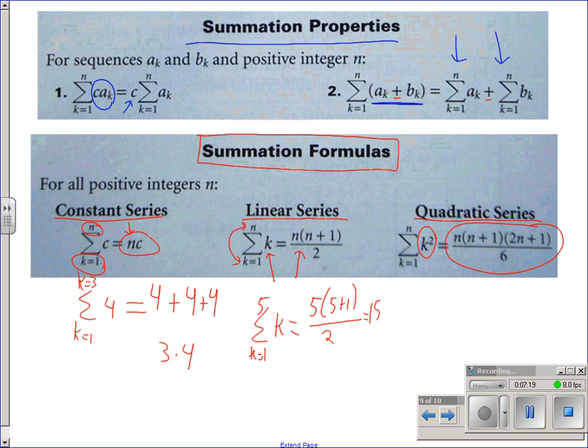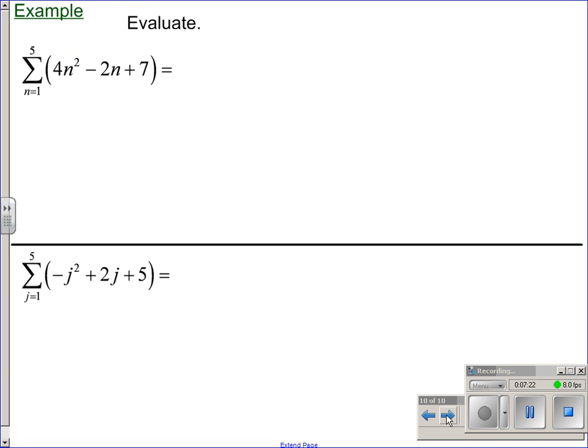So, what we're going to do is combine the properties with these formulas to do these examples. I'm going to expand this thing out. Now, we've got adding and subtracting terms here. So, to start with, n equals 1 to 5 of 4n squared. Then, we're going to subtract the summation of 2n, n equals 1 to 5. And then, we're going to add the summation of 7 from n equals 1 to 5. Now, these first couple terms, there is a constant. We can factor that out. 4 times the summation of n squared, n equals 1 to 5, minus 2 times that summation of n from n equals 1 to 5, plus the summation of 7 from n equals 1 to 5. Now, I'm just going to use those formulas.